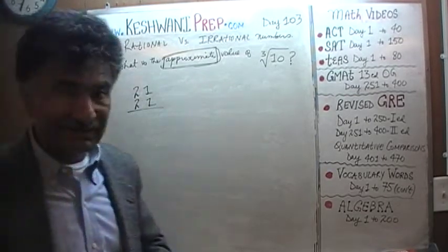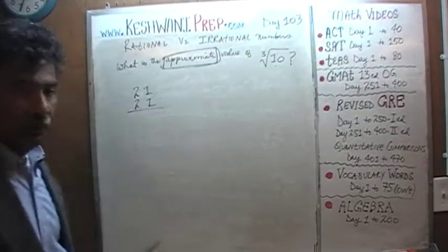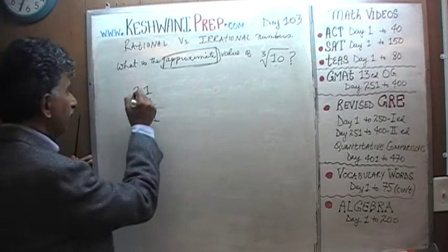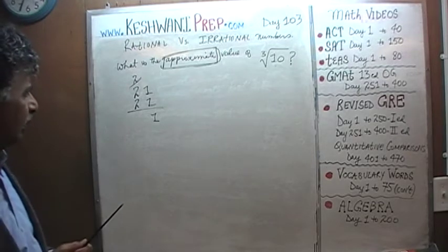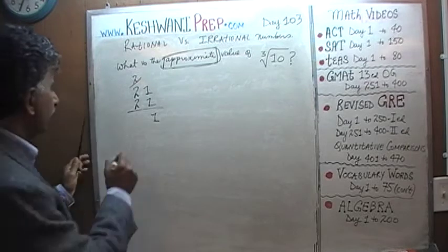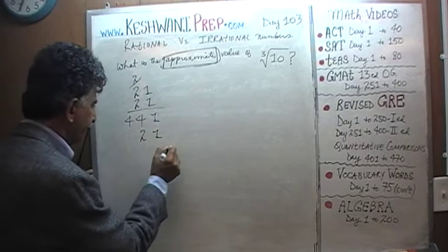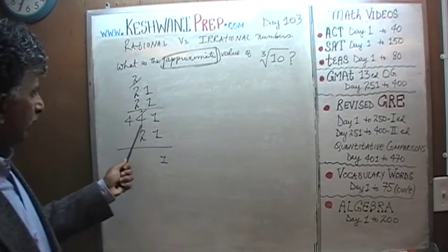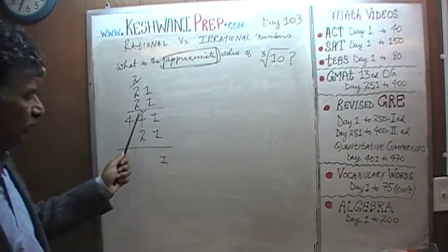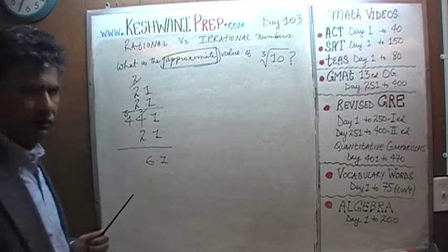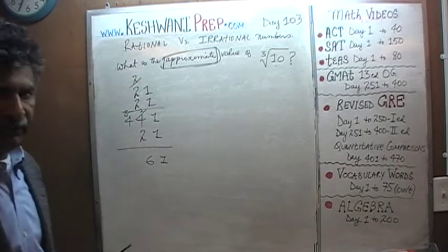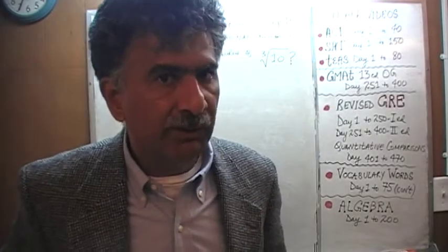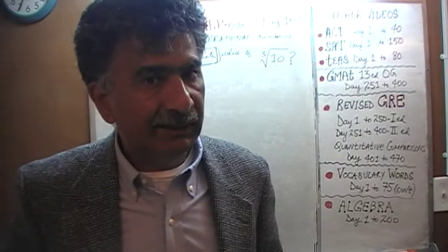When I say multiply 21 by 21, that's exactly what I mean — we are not going to do it one digit at a time like a baby. So: 21 times 1 is 21, carry 2; 21 times 2 is 42, plus 2 is 44. That gives us 441. Now multiply 441 by 21: 21 times 1 is 21, carry 2; 21 times 4 is 84, plus 2 is 86, carry 8; 21 times 4 is 84, plus 8 is 92. So we get 9261.